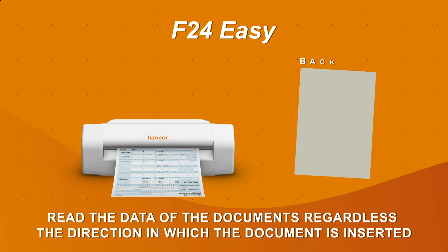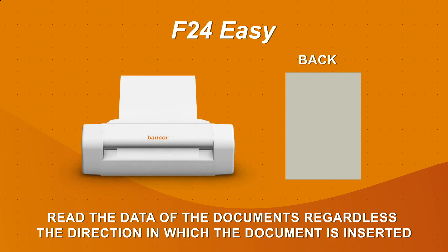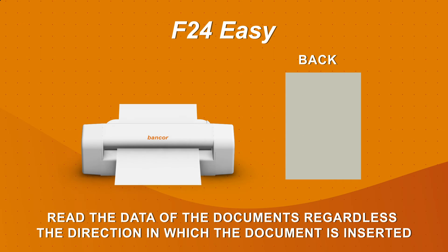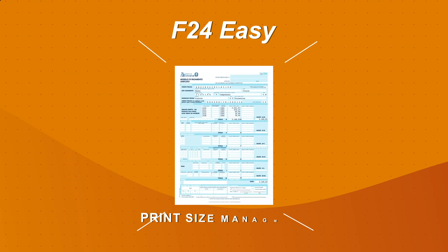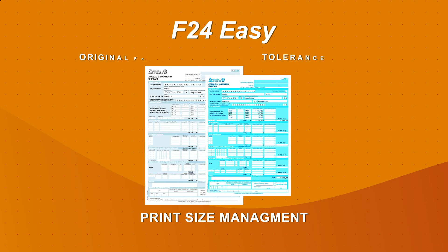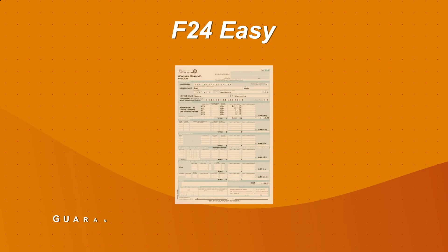Bancor F24 Easy is also a dynamic software equipped with further state-of-the-art capabilities that allow it to read the data of the document regardless of the direction in which the document is inserted, and manage different print sizes of the document up to a tolerance of 10% from the original form.